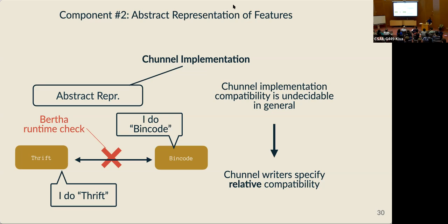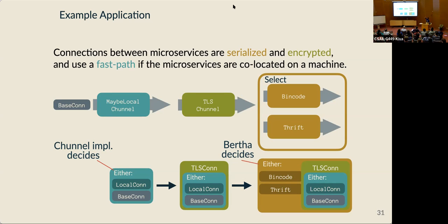Putting it together: the application developer links with libraries providing different channel implementations and then instantiates channels representing the features they want in their connections. For our example application, we've linked with libraries that implement fast-path functionality, a TLS channel, and two possible implementations of serialization. We use composition and the select to make a channel stack that serializes application objects using either bincode or Thrift depending on runtime compatibility checks, then encrypts those bytes, and then routes them correctly based on the runtime environment. From this channel stack, we create a connection by applying each of these connection transformations in sequence.